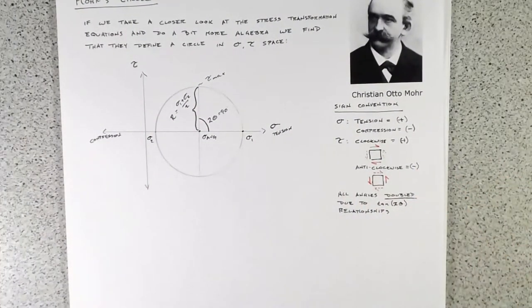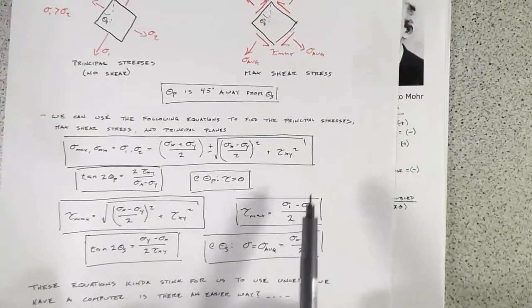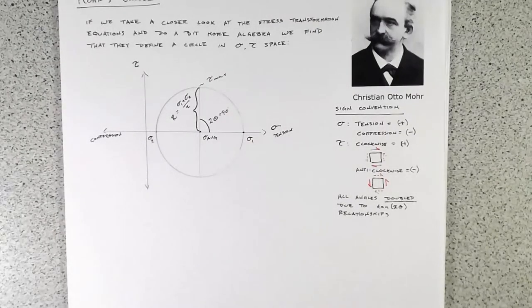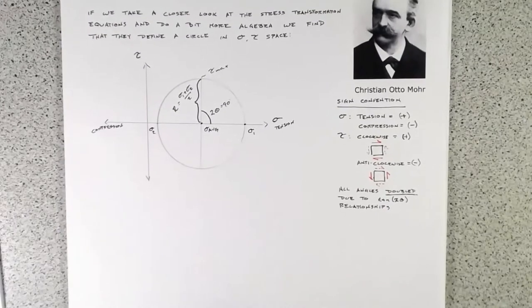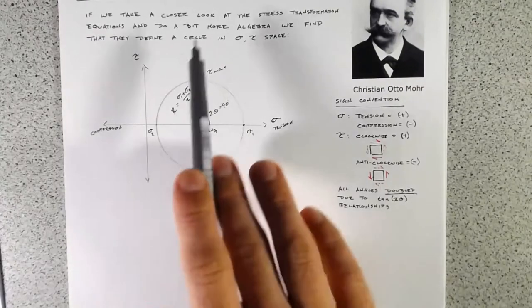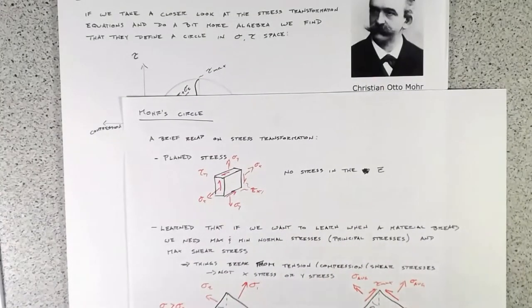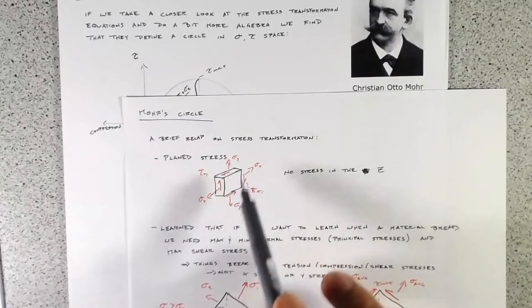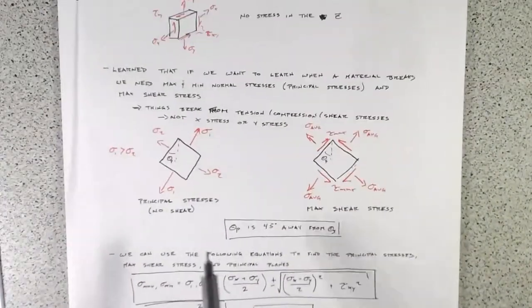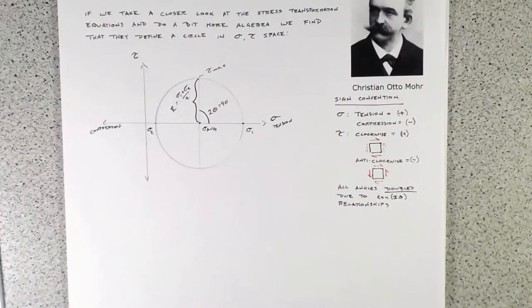Those are some really nice relationships — we've done no major math, we've just plotted stress states and used these relationships. This is relatively quick. But the question is: how do we use this when we're given a generic stress state with sigma x, sigma y, and tau, and we need to work through to find sigma 1, sigma 2, and tau max? That's probably best done with an example.